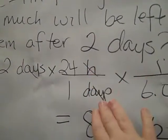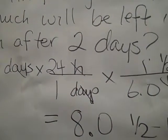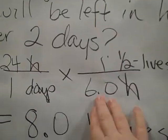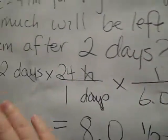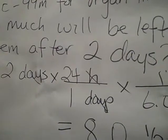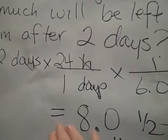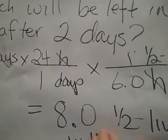I assumed that two days had gone by, and it's a given amount, the 24 hours in a day, but they were telling me that it was 6.0 hours per half-life. So if I assumed that there were two full days going by, then there would be 8.0 half-lives.